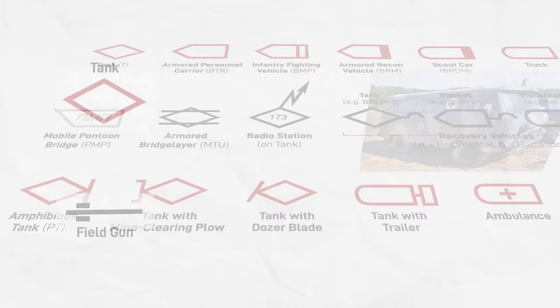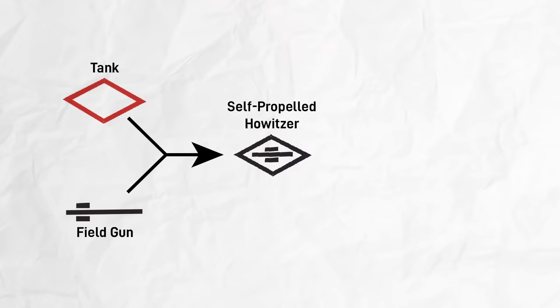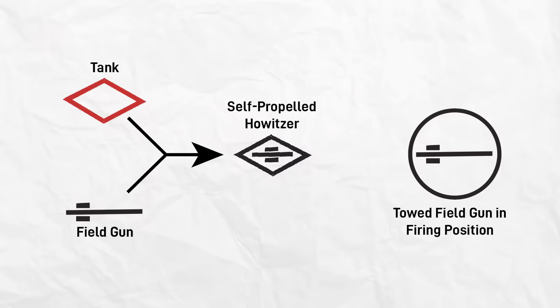For self-propelled weapons, a specific weapon can be added to these vehicle symbols. When they're not self-propelled, meaning either towed or dismounted weapons, they're normally depicted as a circle. Luckily for the NATO heads among you, these symbols are pretty similar to the NATO standards.